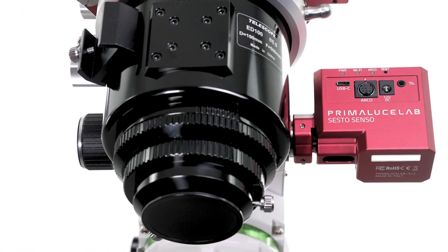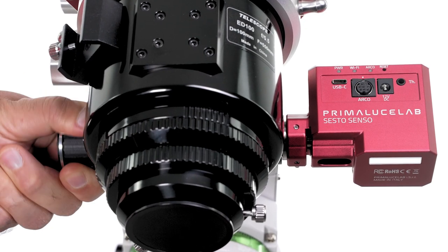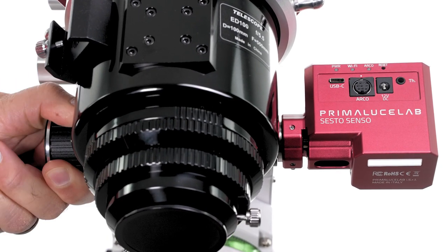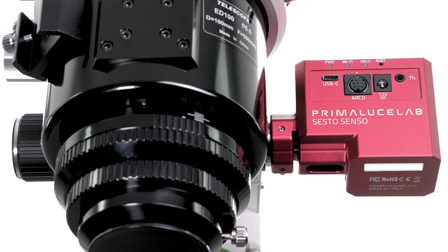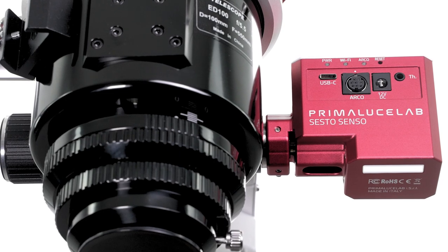Once done, make sure that the Sesto Senso body doesn't rotate by moving the coarse knob on the other side. If the motor still rotates, please make sure to lock your focuser's 25mm shaft by adjusting the focuser's screws.